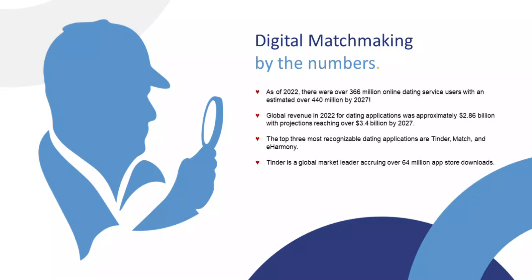Looking at the numbers alone, as of 2022 there were over 366 million online dating service users, with an estimated over 440 million by 2027. Global revenue for dating applications was approximately $2.86 billion in 2022 and is projected to grow substantially by 2027. The top three most recognizable dating applications are Tinder, Match, and eHarmony. Tinder is currently the global market leader, accruing over 64 million application store downloads.